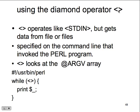The diamond operator - which looks like less than/greater than - operates like standard input but gets data from files. Files are specified on the Perl command line when invoking the Perl program. This reads command line argument values: 'while (<>)' reads in the file. This is one, two, three lines of code to find a file, open it, and read in the contents. Type the executable name followed by the filename - it reads directly from the command line argument.